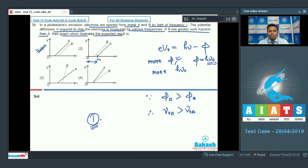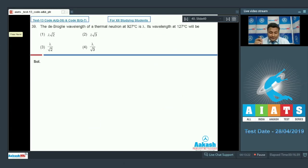Here is question number 39, everyone. The de Broglie wavelength of thermal neutron at 927 degree centigrade is lambda. Its wavelength at 127 degree centigrade will be what? Now we know very well the wavelength for any moving particle.